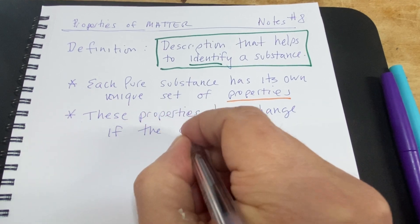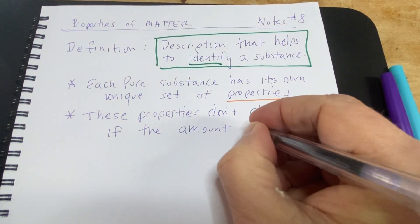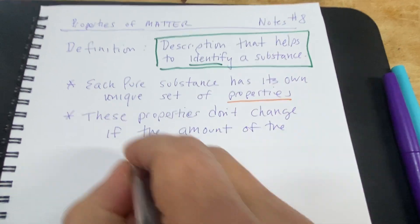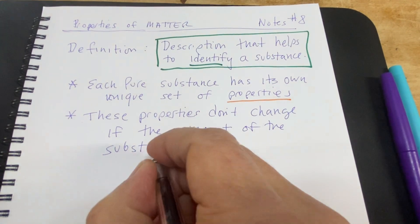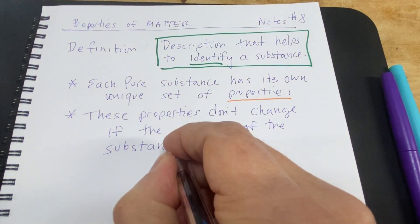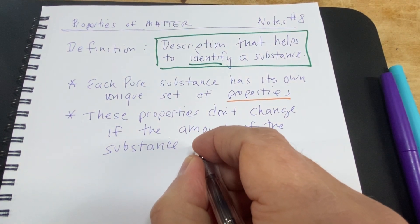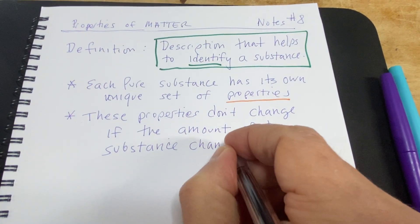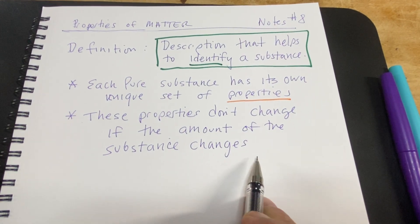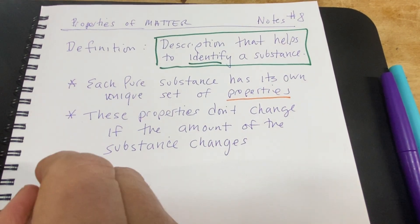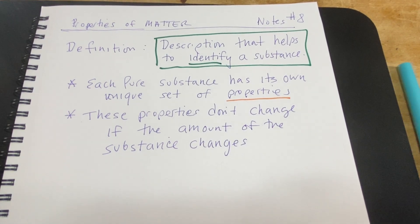We could change the amount of what we have, but the property wouldn't change. No matter if you have a ton of it, or if you have just a few micrograms of it, the properties don't change if the amount of the substance changes. It's always the same, no matter how much of it you have.